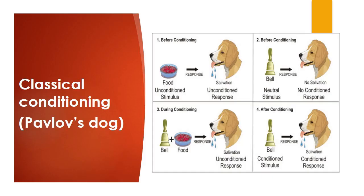Classical conditioning was developed by Pavlov in his famous experiment with a dog. Pavlov observed that the dog salivates when it sees food, but it does not salivate when it hears the sound of a bell.